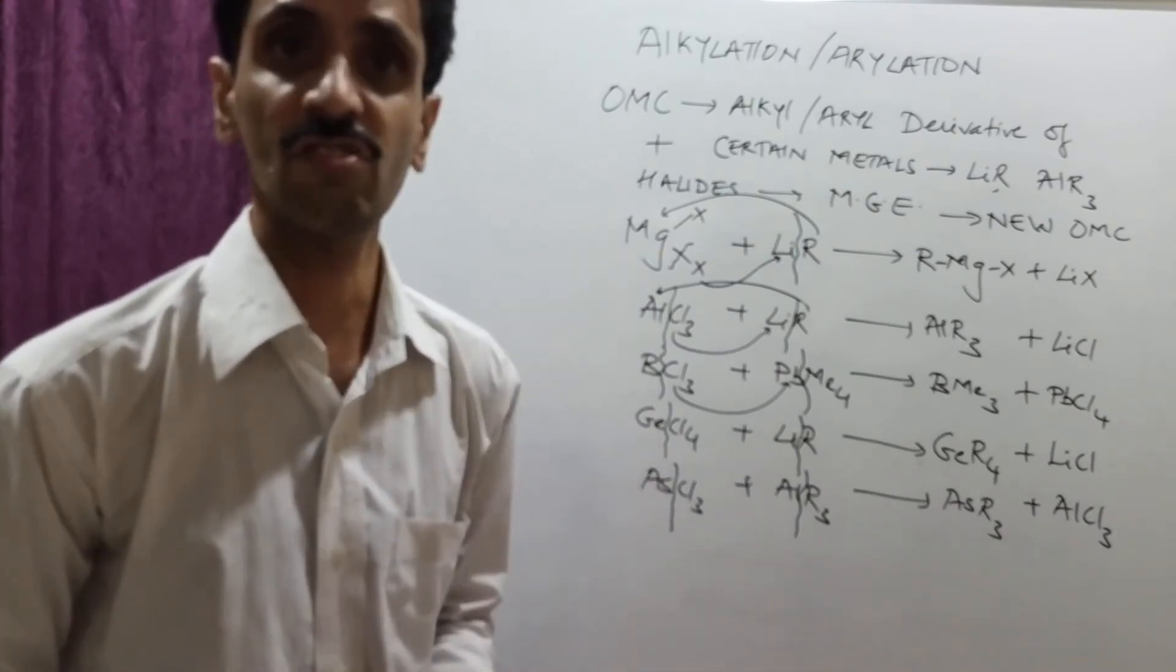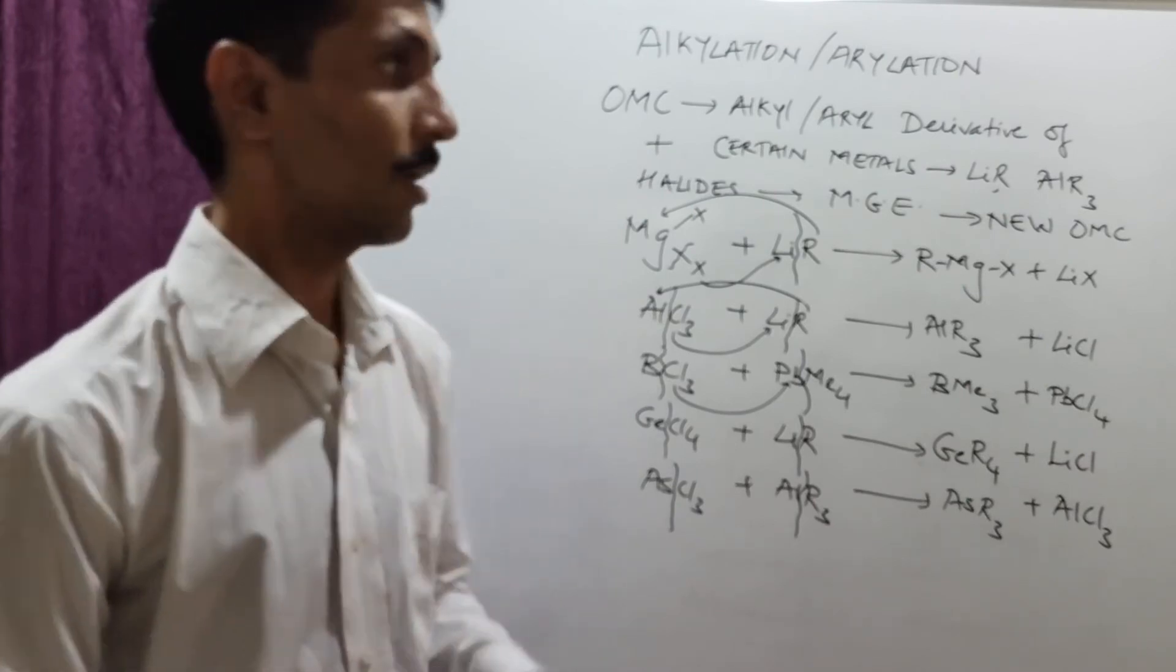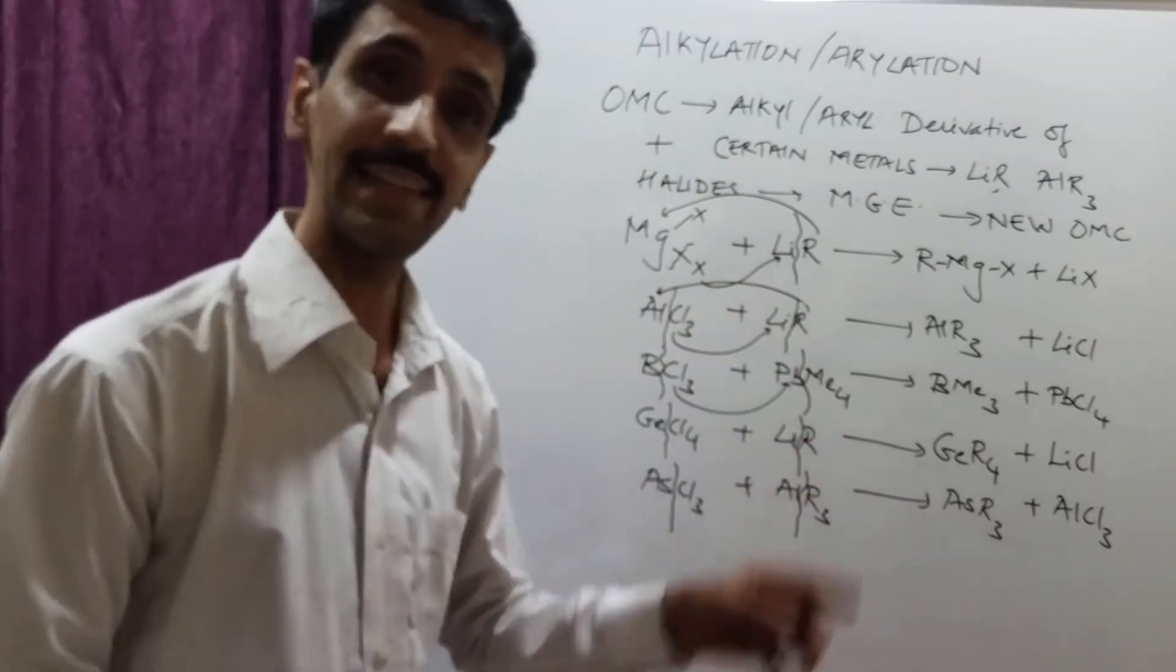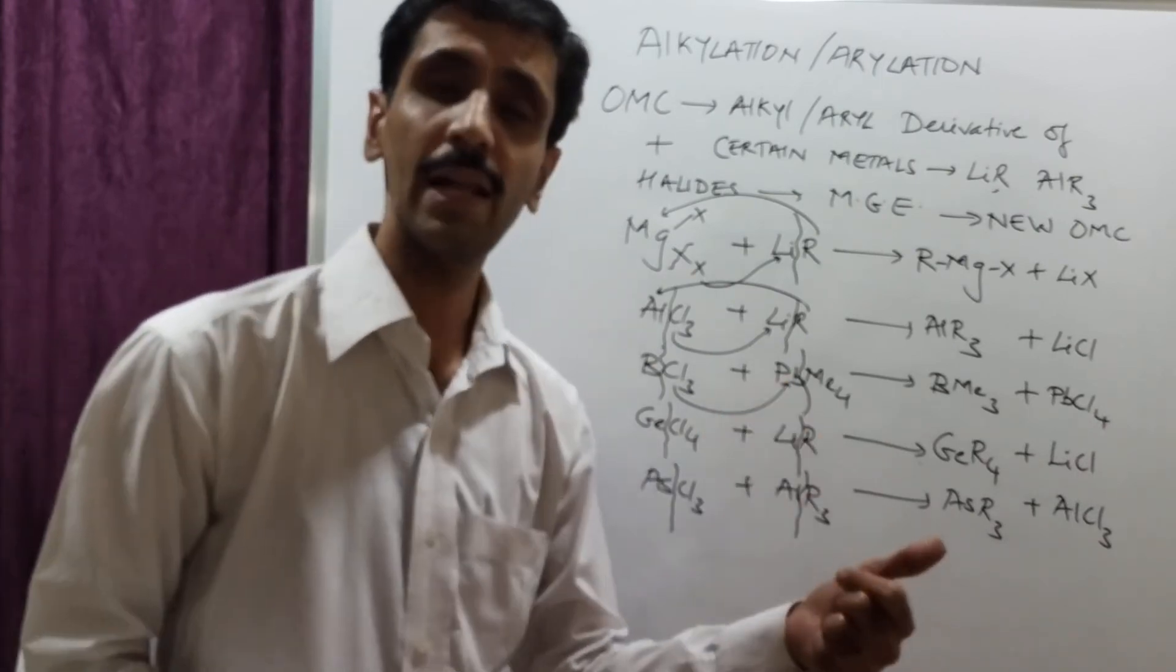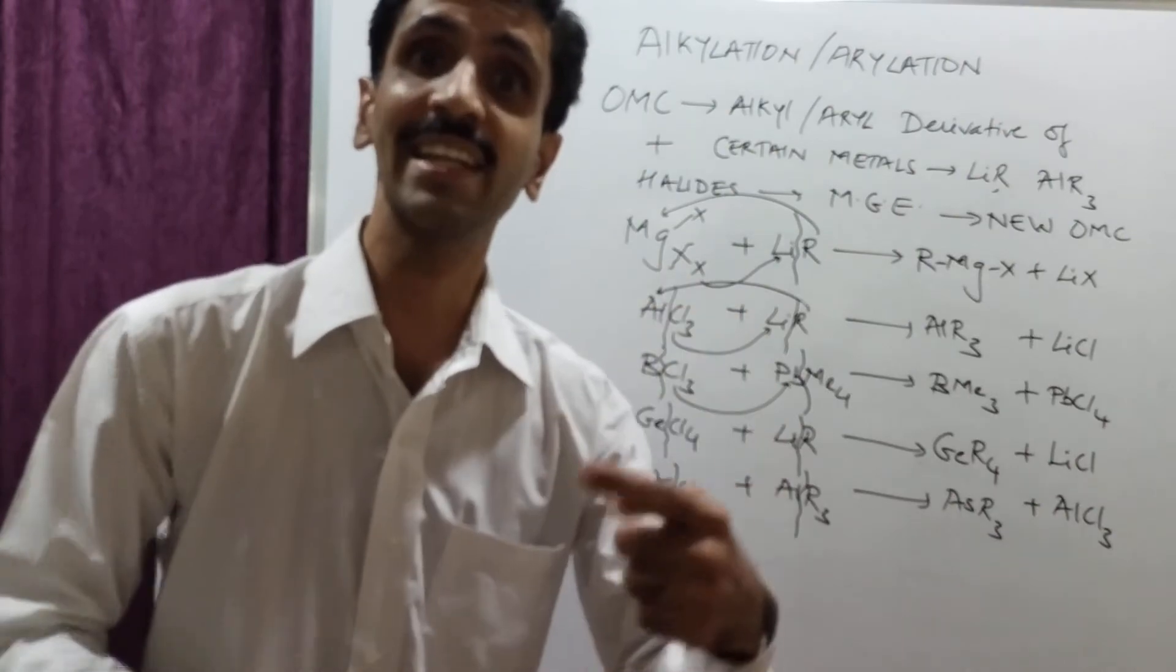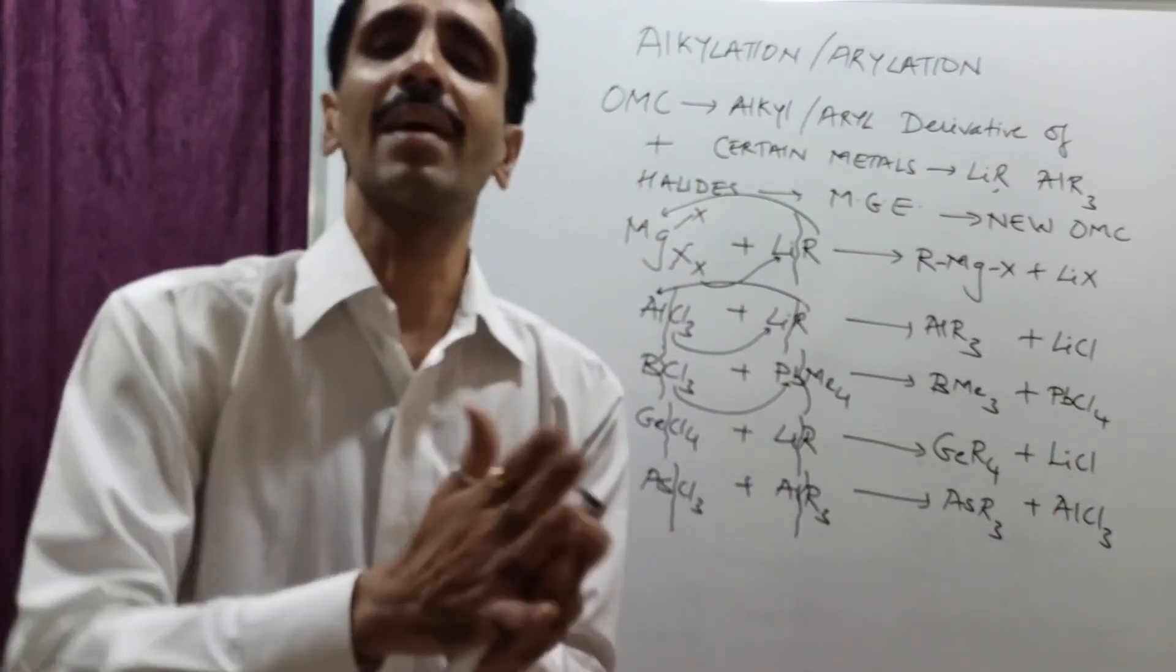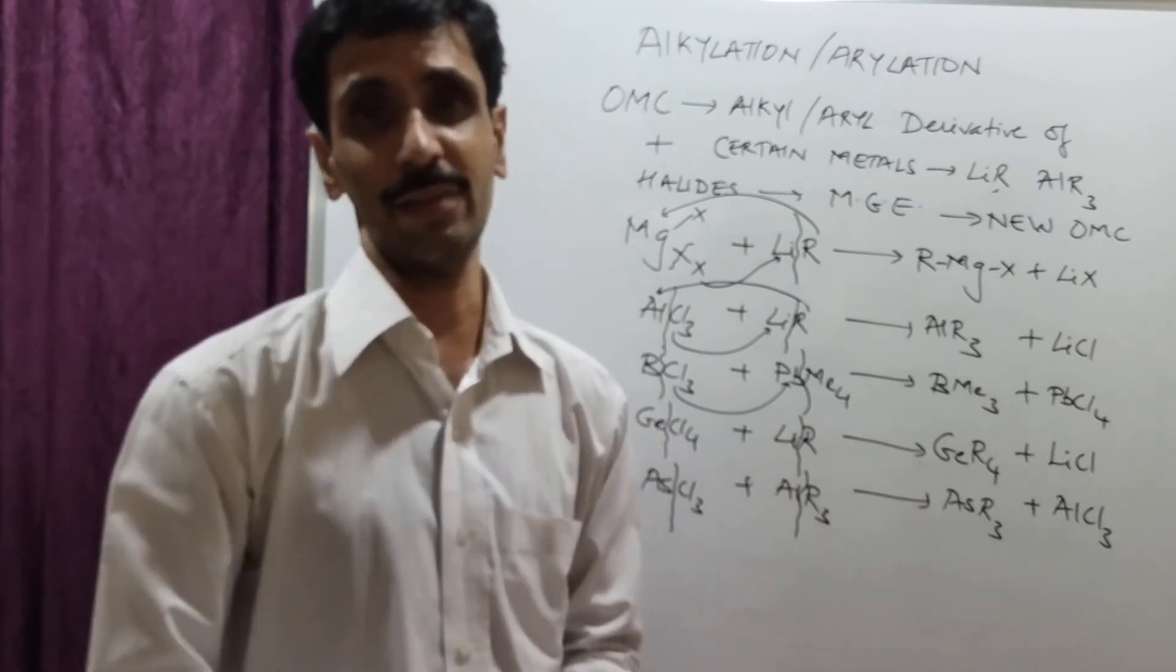So, my dear friends, these are the reactions whereby we have taken examples with respect to already organometallic compounds, the alkyl or the aryl derivatives of electropositive metals. We considered lead as well, because it belongs to group 14, the last element of group 14.